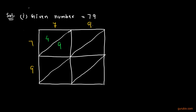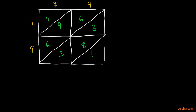Now we shall multiply 7 with 7 to get 49 and write 49 in the appropriate cell. Then 7 with 9 to get 63 — we write the unit digit in the lower part and the tens digit in the upper part of that cell. Then we multiply 9 with 9 to get 81.